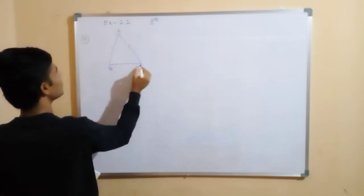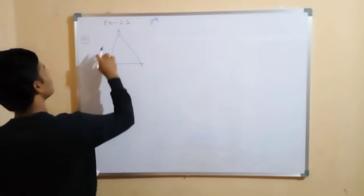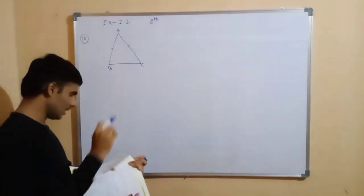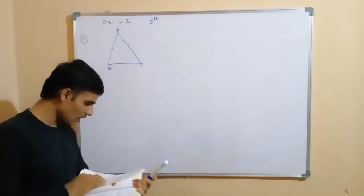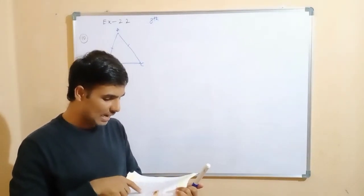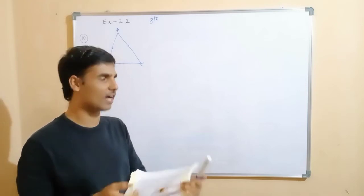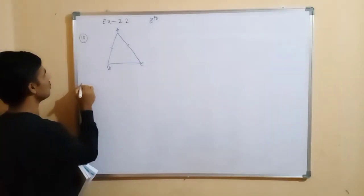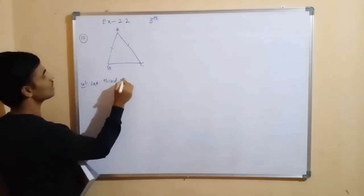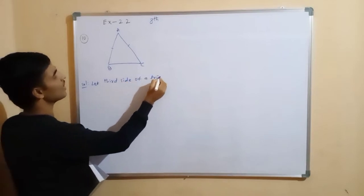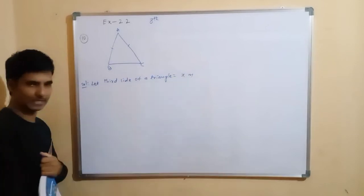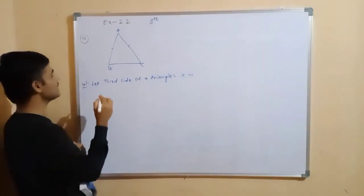Suppose the vertices are A, B, C. Two equal sides are given. We don't know the length of the equal sides. Let the third side of the triangle equal to x meters. Next, each equal side of the triangle equals — see what they give here.